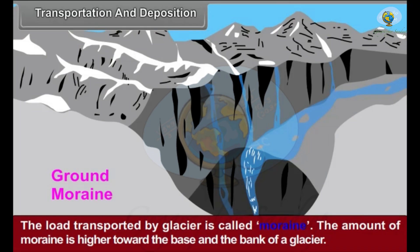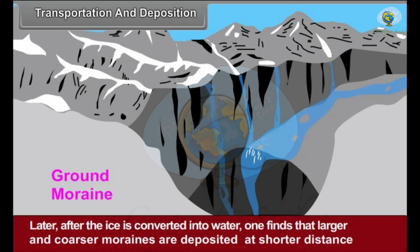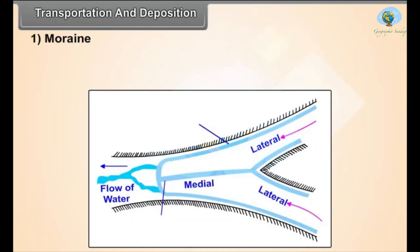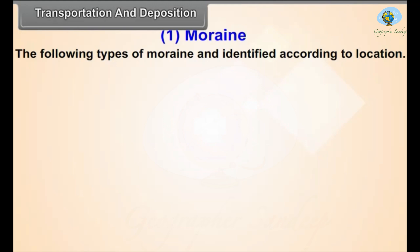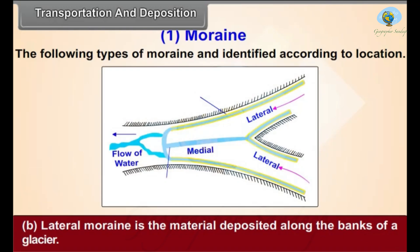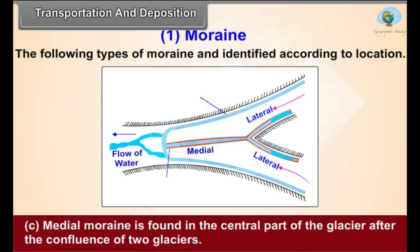Transportation and deposition: The load transported by glaciers is called moraine. The amount of moraine is higher towards the base and banks of a glacier. After the ice is converted into water, larger and coarser moraines are deposited at shorter distances, while finer moraine is carried over longer distances. Types of moraine: Ground moraine is the material deposited at the base of the glacier. Lateral moraine is the material deposited along the banks of a glacier. Medial moraine is found in the central part of the glacier after the confluence of two glaciers.